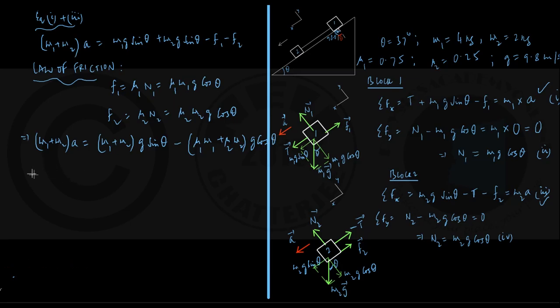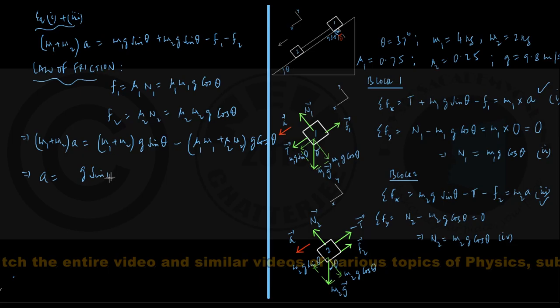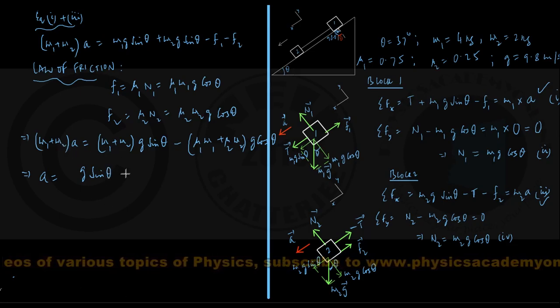Once we are here, it follows therefore acceleration of the two-block system moving down the incline a, that is coming out to be g sin theta, I am dividing both sides by m1 plus m2 and I am getting this g sin theta minus